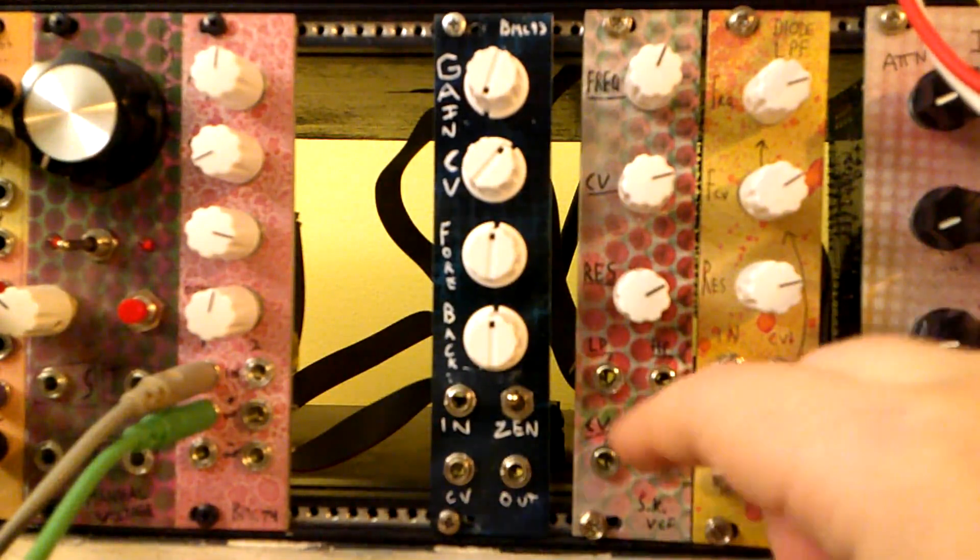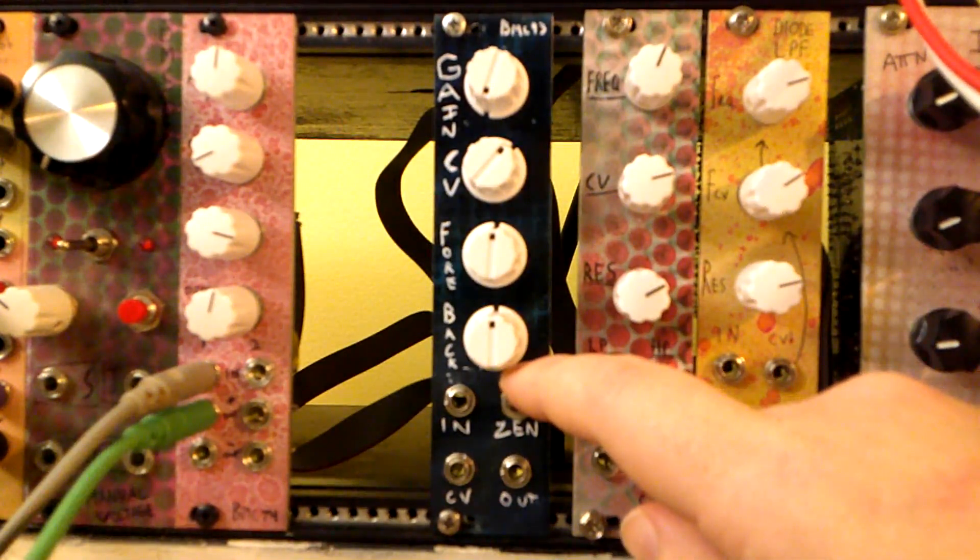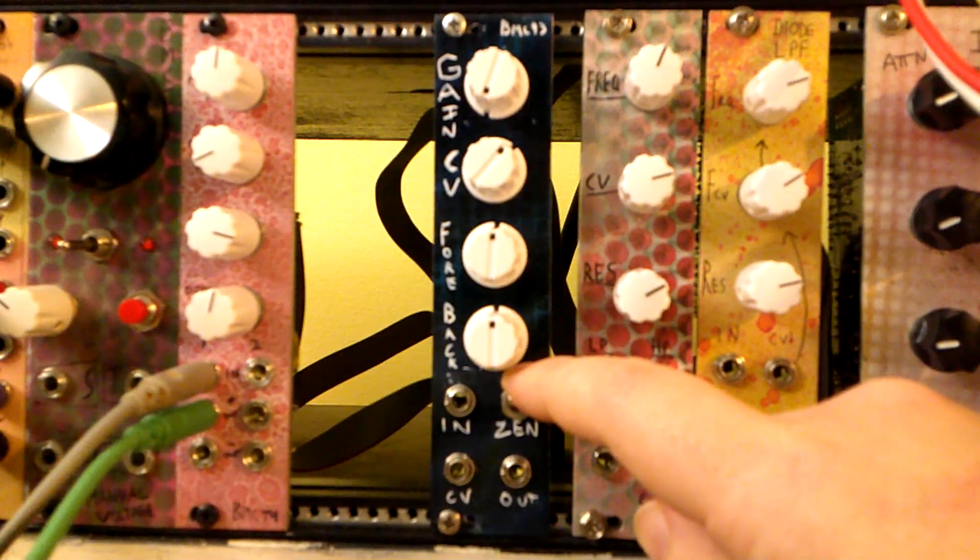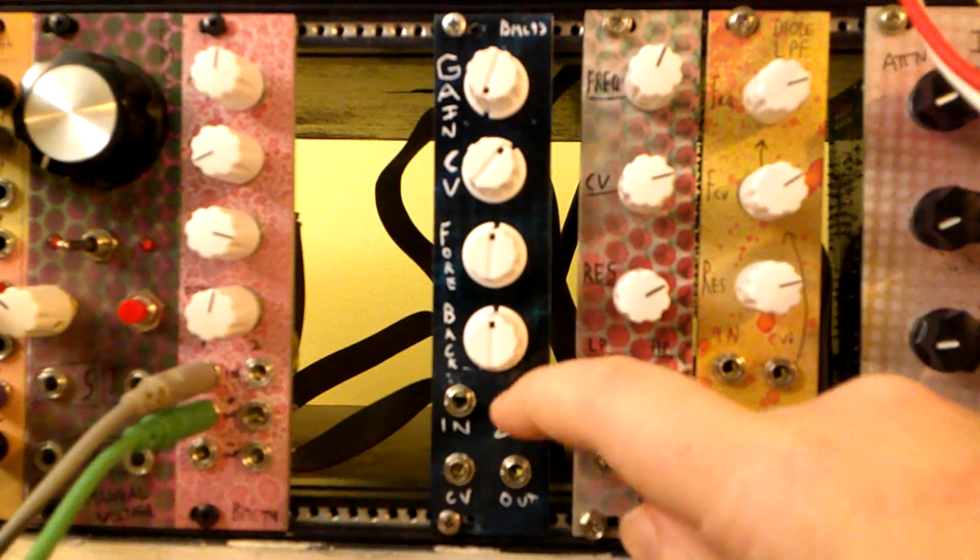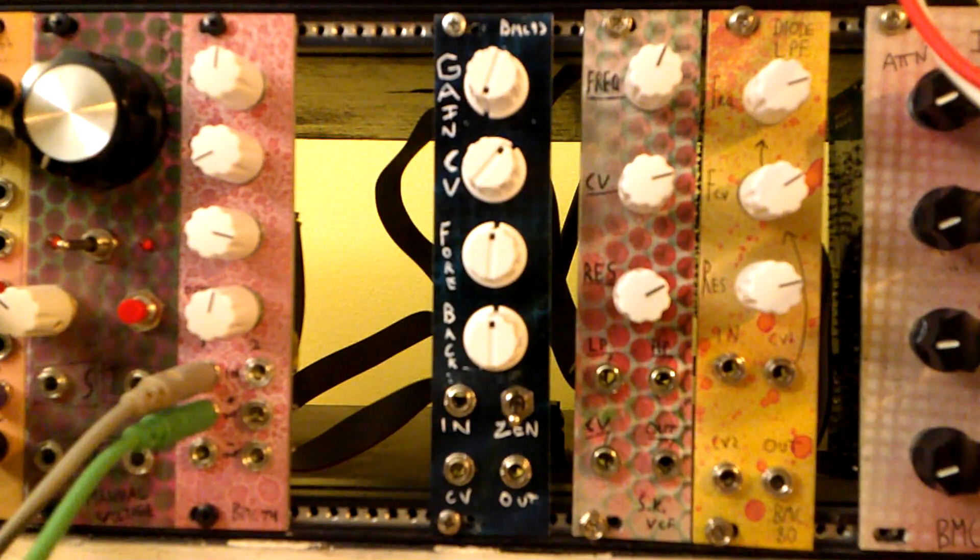And in addition, when doing that, it also has this Zener diode switch, which clips the signal on the output to keep it within plus-minus-five volt range. So you'd be able to use it as kind of a voltage-controlled saturator doing that.